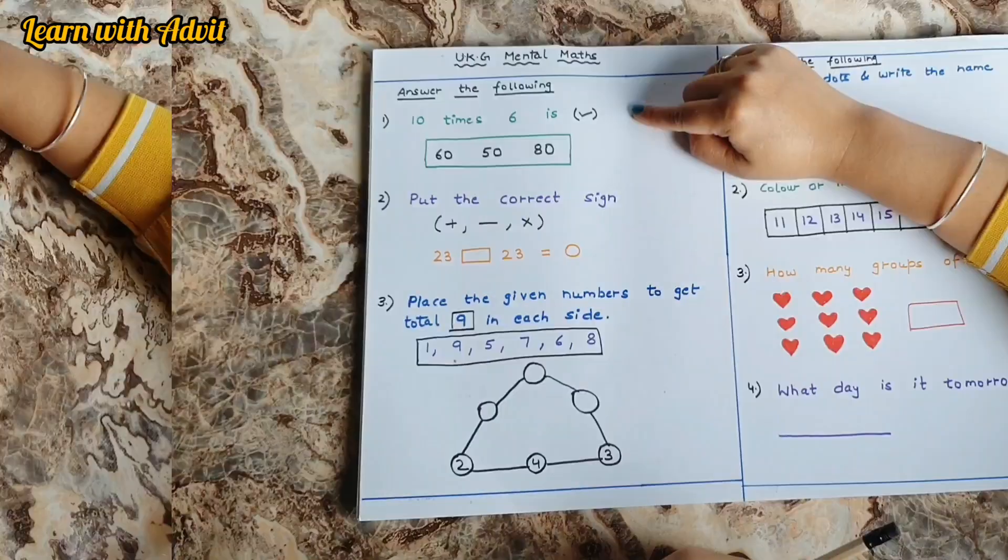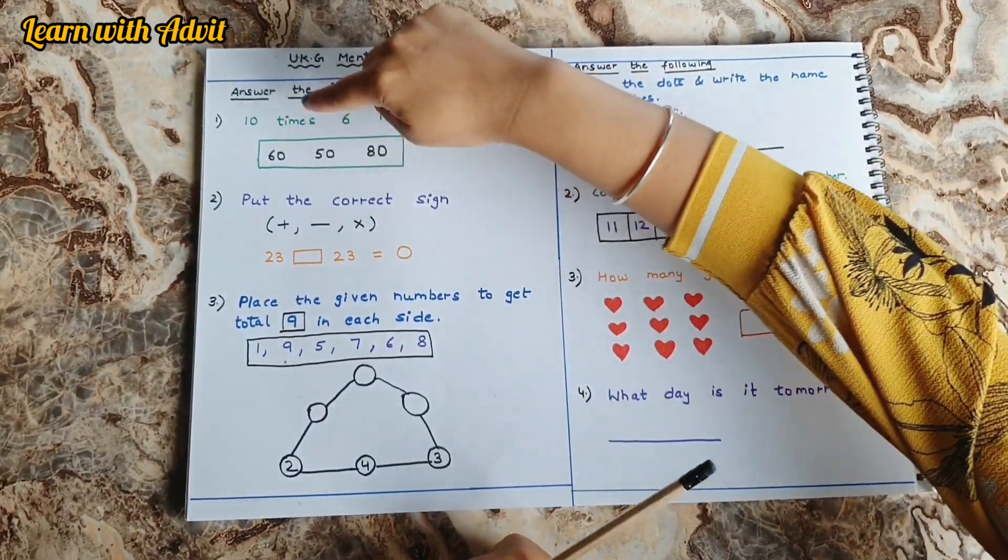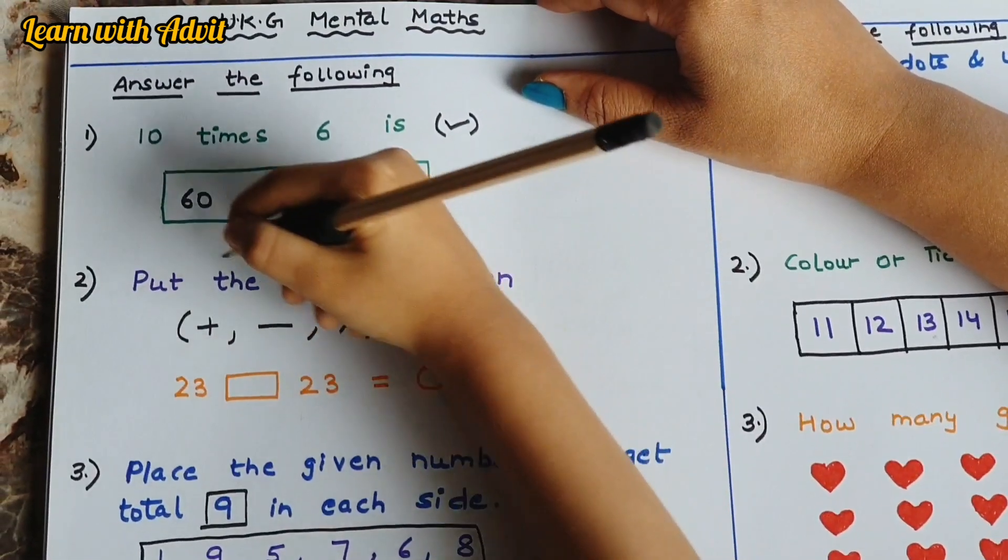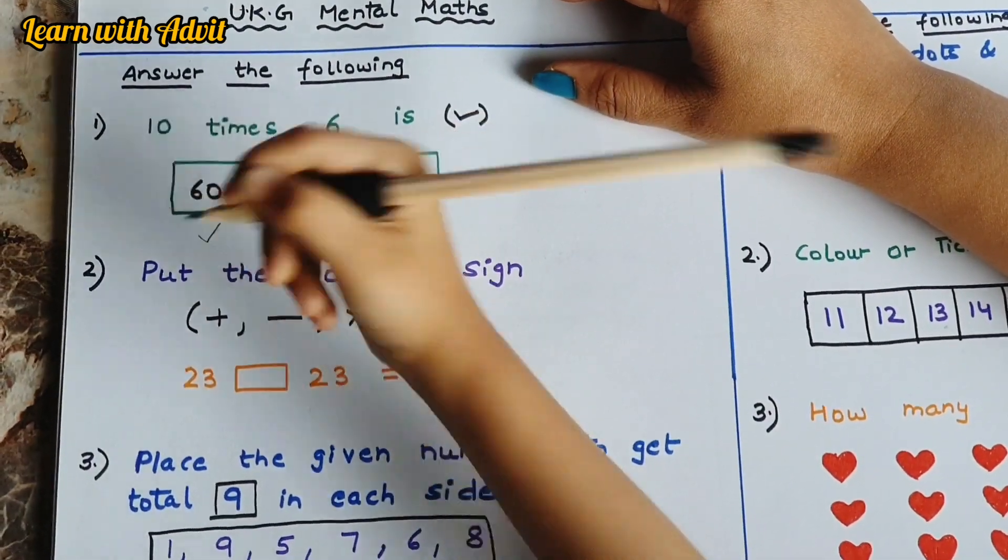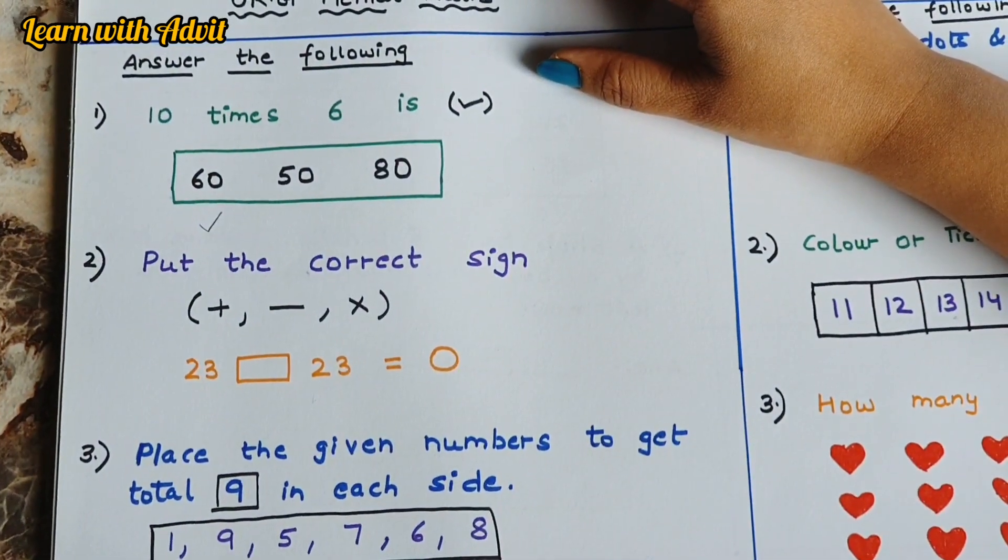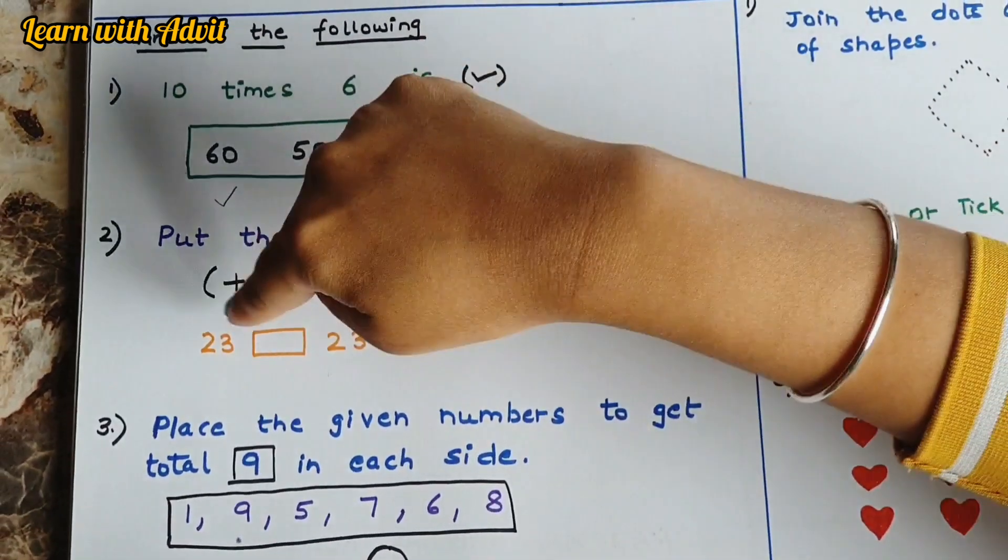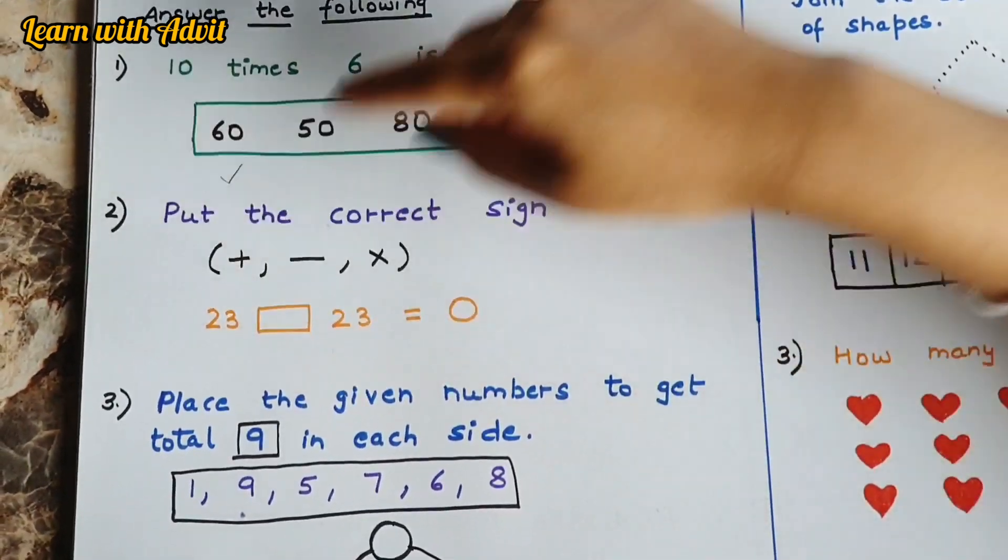And this again you have to answer. 10 times 6 is which one is correct? You have to tick. 10 times 6 is 60. Very good. 10 times 8 is 80. Very good.